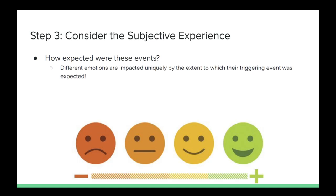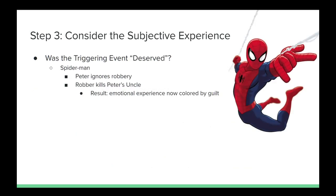Another crucial idea to consider at this point is the perception of whether or not the triggering event was deserved. Both guilt and innocence are powerful lenses for coloring an emotion. The degree to which a particular emotion is felt is often colored by the knowledge of what role we played in the triggering event. Perhaps one of the most widely known examples of this is in the origin of Spider-Man.